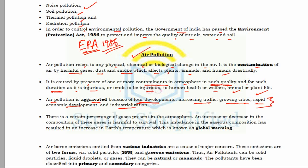Air pollution is aggravated by four main developments: increasing traffic, growing cities, rapid economic development, and industrialization — which are mainly human factors. In a normal condition, the atmosphere contains certain percentages of gases such as oxygen, nitrogen, argon, and water vapor. An increase or decrease in this composition is harmful to survival, and this imbalance has resulted in an increase in the earth's temperature, known as global warming.